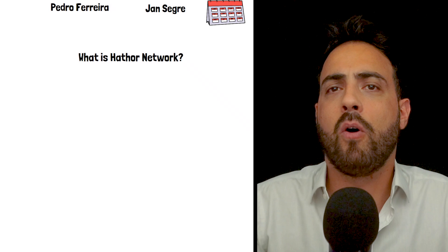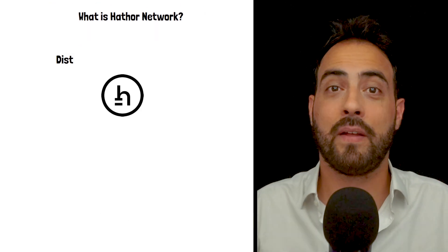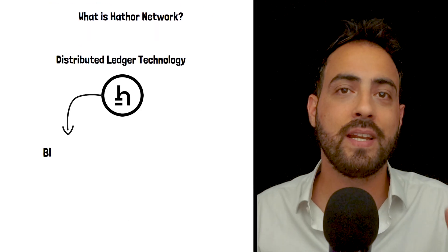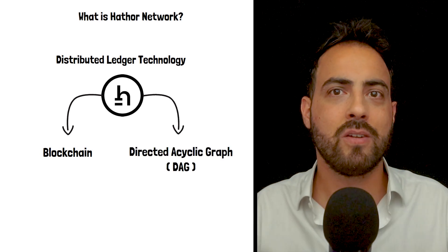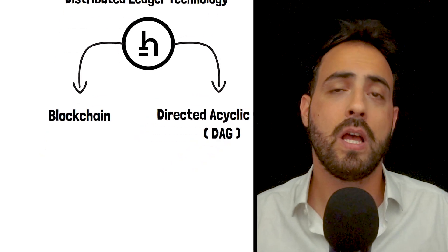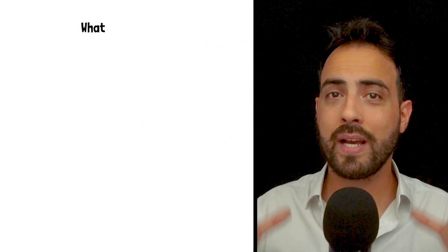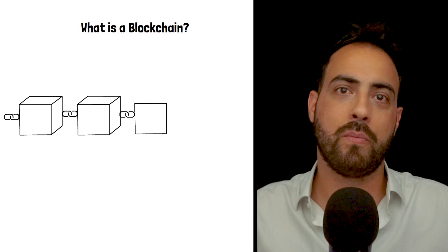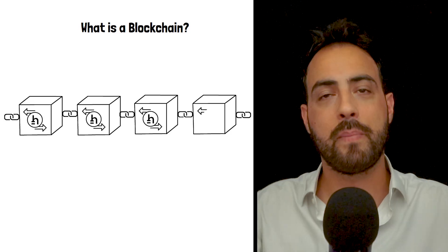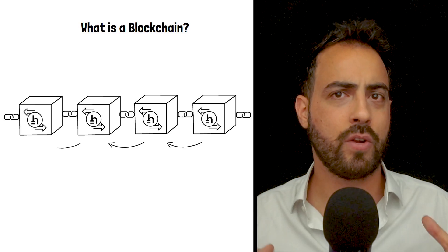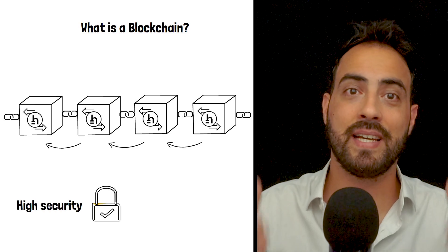Hathor is a type of distributed ledger technology that combines elements of both blockchain and direct acyclic graph technologies. Now, I know that sounds very confusing, so let's break down some definitions first. Simply put, a blockchain organizes data into a linear chain of blocks where each block contains multiple transactions and is linked to the previous one. This structure ensures high security, but it is generally slow.